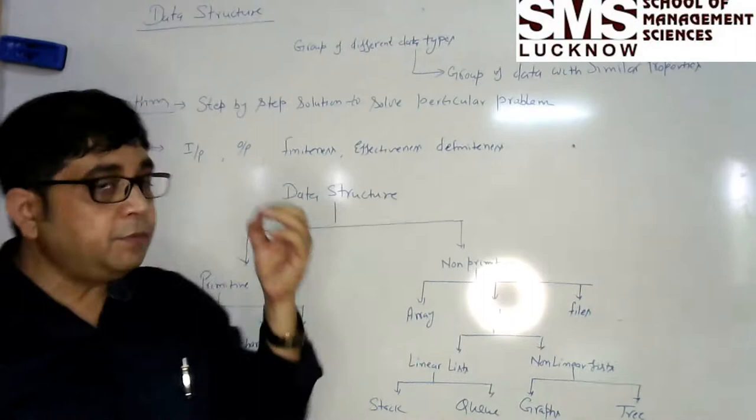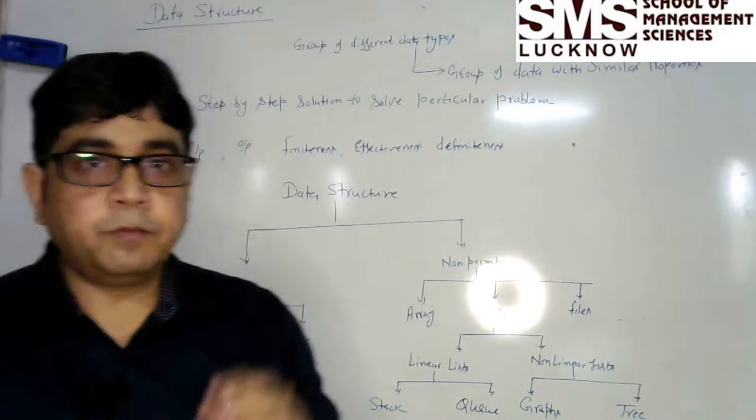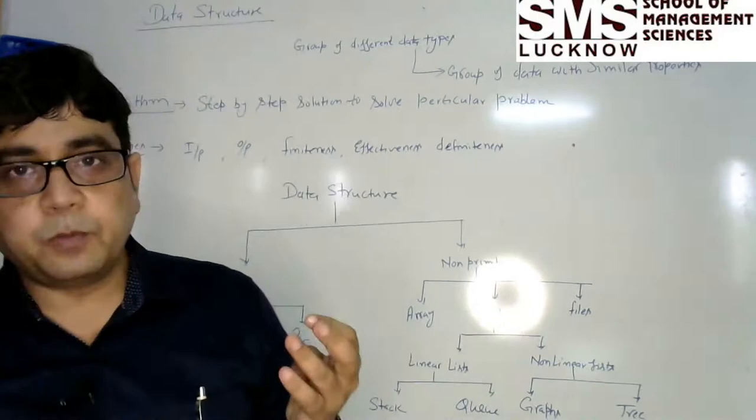And what is the data type? Data type means group of data items with similar properties, with similar behavior. In C programming language by default there are available integer, float, character and pointer data types.